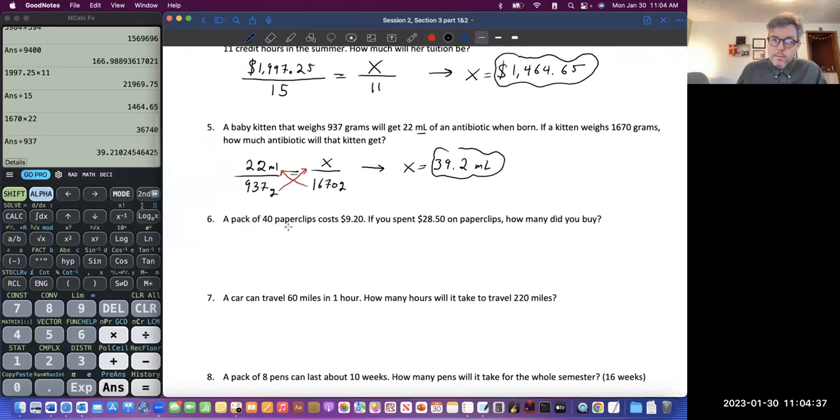A pack of 40 paperclips costs $9.20. If you spent $28.50 on paperclips, how many did you buy? So we're trying to solve for how many paperclips. So 40 paperclips was $9.20. How many paperclips would it be for $28.50?